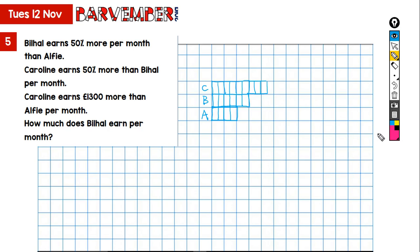So what else are we told? We are told that Caroline earns 1,300 more than Alfie. So Caroline compared to Alfie, this is where Caroline and Alfie are equal, so the difference is this bit here. So this is the difference between Caroline and Alfie and that's 1,300. And we can see from our model that that 1,300 is equal to 1, 2, 3, 4, 5 of these equal portions.